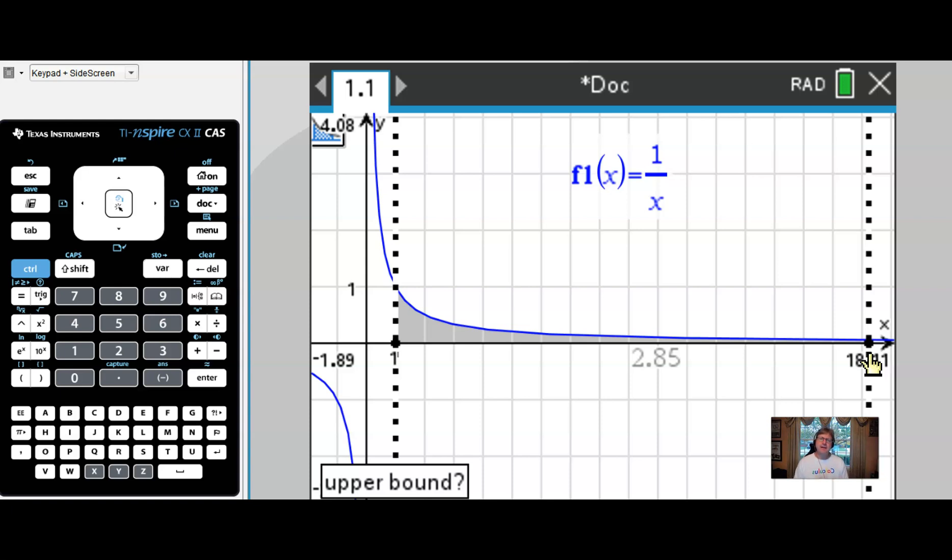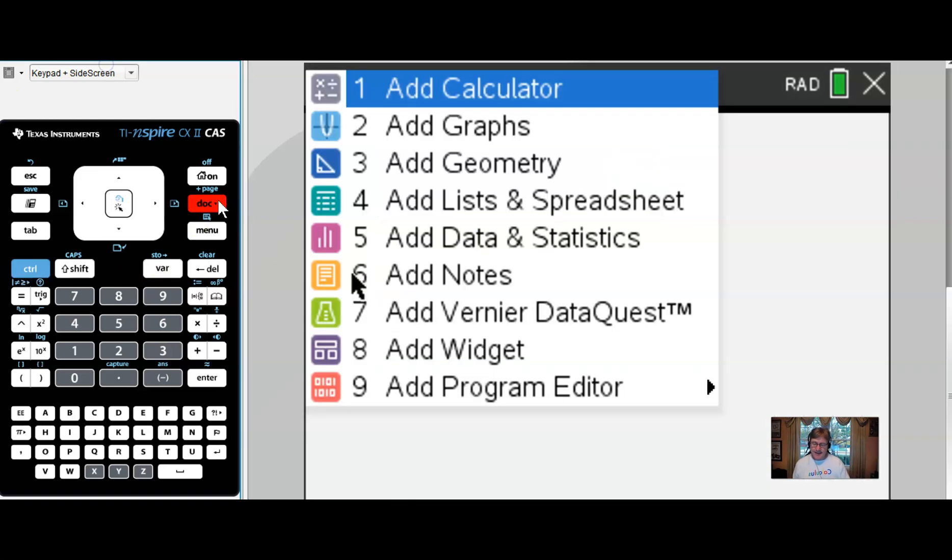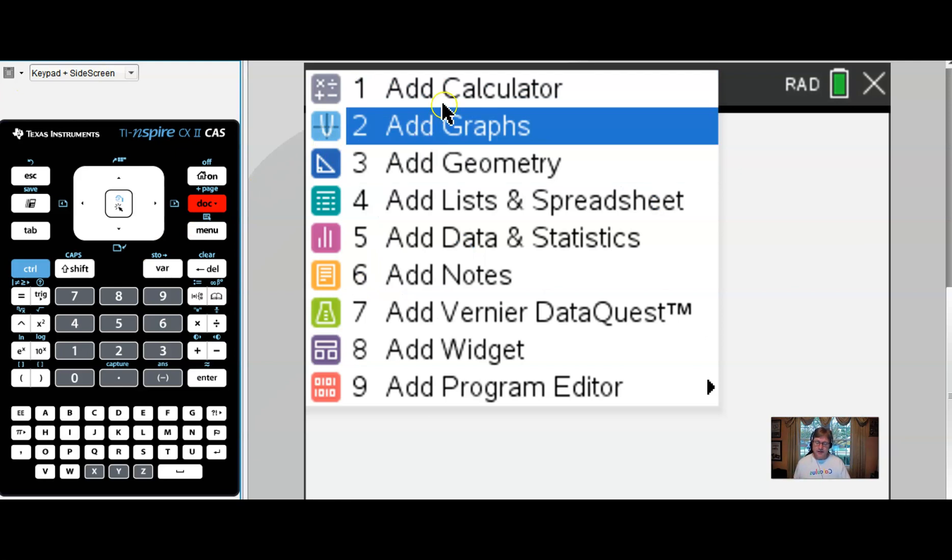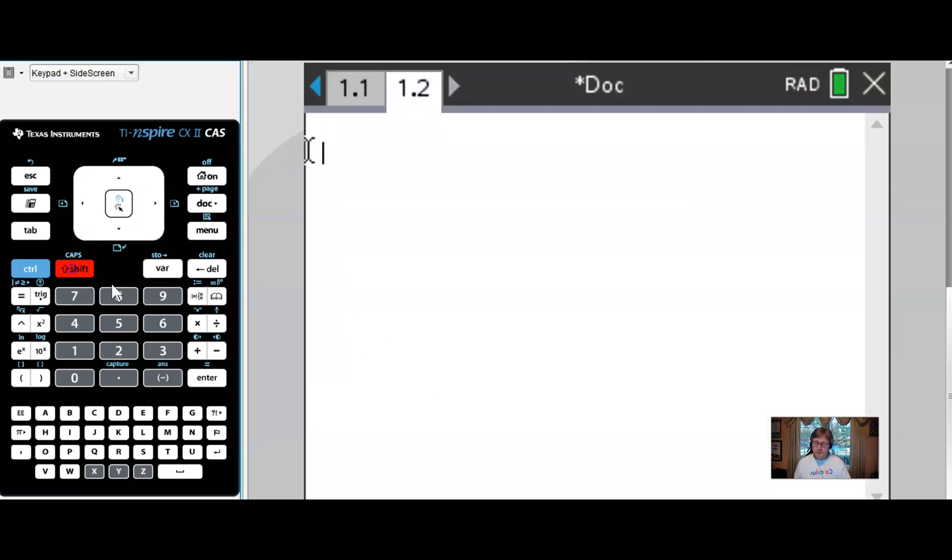However, if you return back to that previous problem that we talked about, 1 over x squared, it's a very different story altogether. And that's what makes this very interesting. Just because we have an infinite amount of space doesn't mean that we can't add it up. Sometimes we can add up an infinite amount of space and get a finite numerical answer. But in the case of this problem, that wasn't working for us.